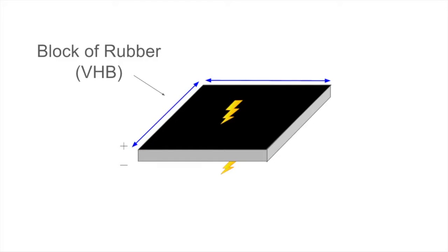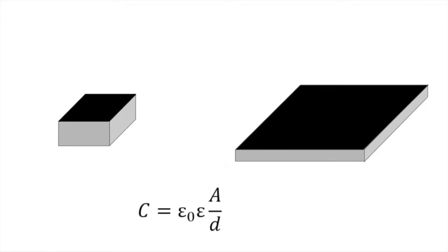Additionally, as we stated earlier, this essentially acts as a parallel plate capacitor. The capacitance is a function of both area A and thickness D. This means that the capacitance changes as the DEA is deformed.